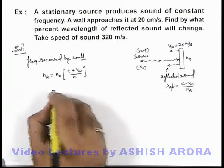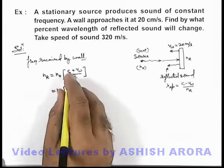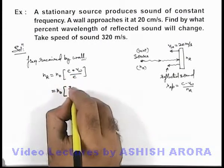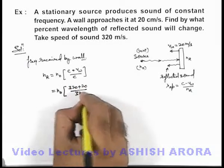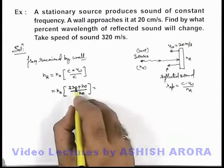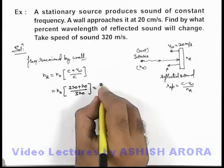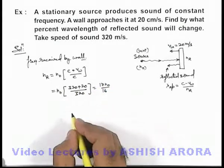On substituting the values, this will be n₀ times (320 + 20) divided by 320. So this will be 340 by 320 that can be written as 17n₀ by 16.